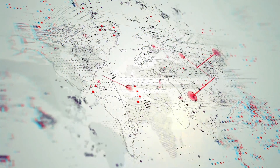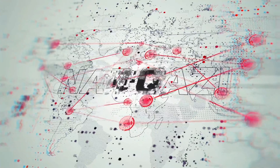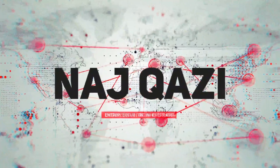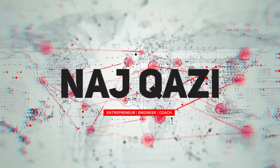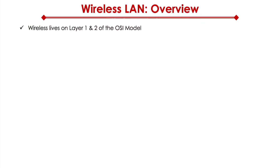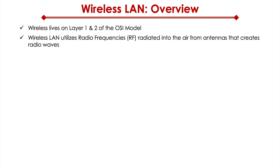Wireless LAN Overview. Wireless lives on layer 1 and 2 of the OSI model. In wireless LAN, we have radio frequencies that are radiated into the air from antennas that create radio waves.